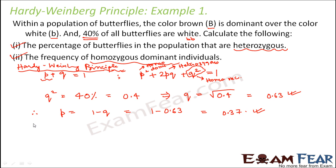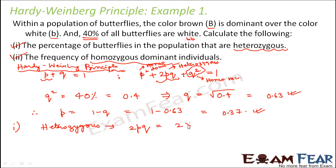Now you know both q and p, so you can calculate the required frequencies. The first part asks for the percentage of heterozygous individuals. Heterozygous frequency is given by 2pq = 2 × 0.37 × 0.63 = 0.47, which is 47% of the population.